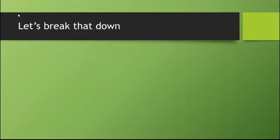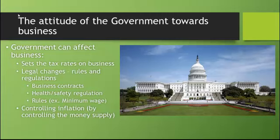When we talk about the attitude of government towards businesses, government can affect business in a number of ways. First, government sets tax rates on businesses, which determines how much of their profits they keep and how much they can reinvest. If tax rates on businesses are low, you tend to see larger economic growth in certain situations. Also, legal changes — rules and regulations — affect the way businesses operate. Laws set by the government affect business contracts, and health and safety regulations affect how businesses can operate and how employees are dealt with. Rules about wages, accessibility, and other things can affect the cost of doing business.